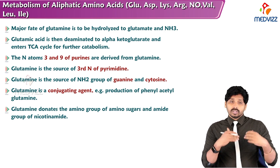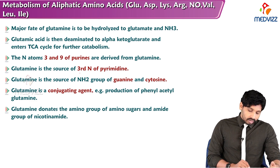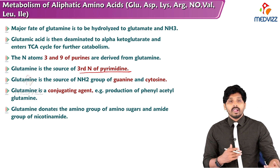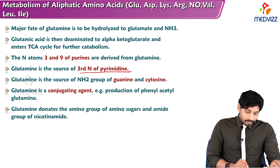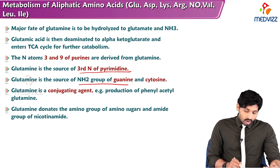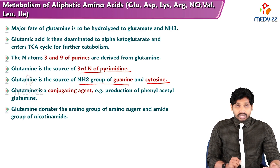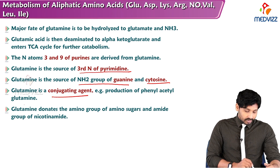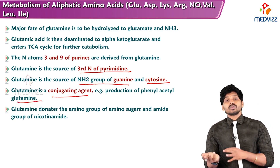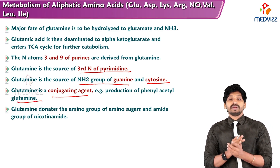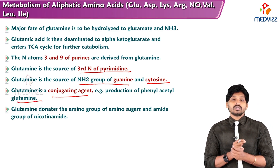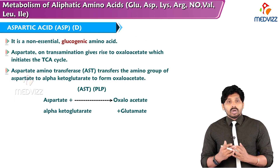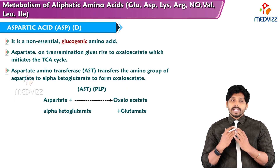Glutamine contributes the third nitrogen of pyrimidines and is the source of the amino group of guanine and cytosine. Glutamine is also a conjugating agent in the production of phenylacetylglutamine and donates the amino group of amino sugars and the amide group of nicotinamides.